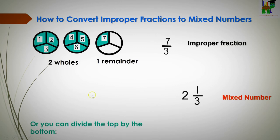Again divide it. Seven divided by three. So three goes into seven twice and one remainder. So you have two and one thirds.